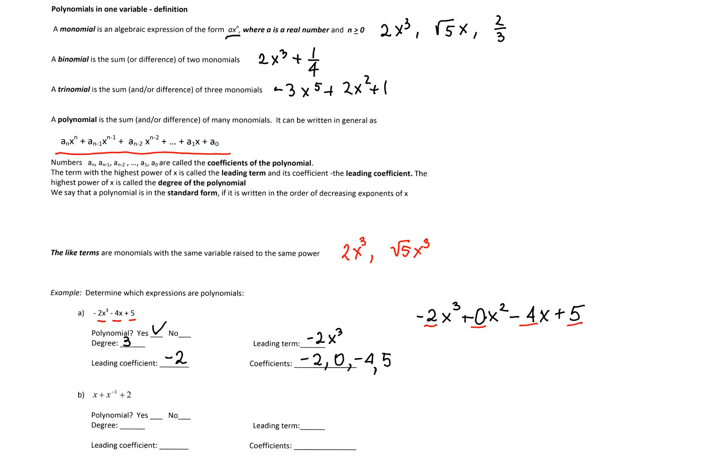As for the second expression, we can see that the second term contains the variable x to the power negative 1. The exponent here is less than 0, and this is not allowed in a polynomial. Therefore this expression is not a polynomial.